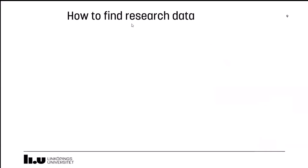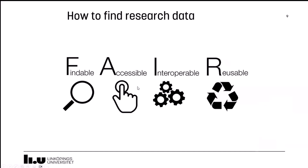Before talking about how to find research data, I want to mention a little about FAIR principles. The FAIR principle stands for Findable, Accessible, Interoperable, and Reusable. It's a principle that describes the appropriate way to publish open data. As Johanna told you, research data is spread around many parts of the internet, and it is important to follow the FAIR principle to make datasets more findable and reusable.